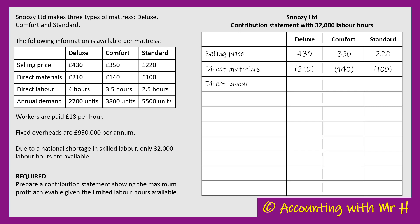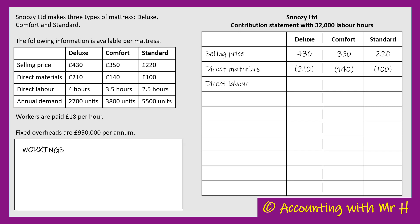My next row is going to be direct labour. To make the Deluxe it takes four labour hours at £18 an hour they get paid, so the labour cost to make a Deluxe is £72.